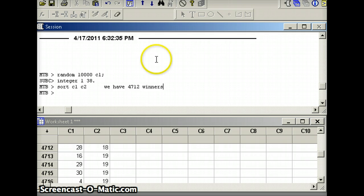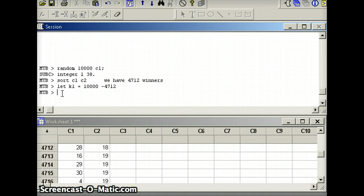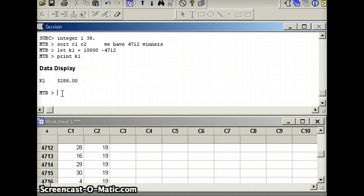If that's the case, how many losers do we have? Let k1 equal, we had a total of 10,000 games. 10,000 games minus 4712. That's 5288. We have 5,288 losers.